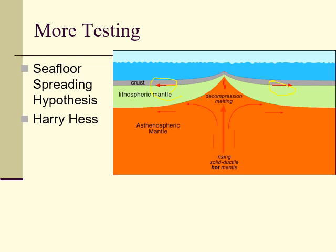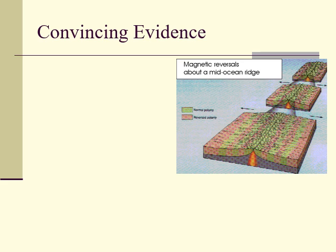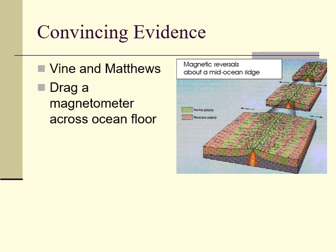So the Atlantic Ocean was getting wider, but scientists wondered: wait, the earth isn't getting bigger — so what's going on? We have to take a look at a few more pieces of evidence before we get there. We have two other scientists, Vine and Matthews, who drag a magnetometer across the ocean floor. And guess what they find? They discover magnetic reversals in the crust.